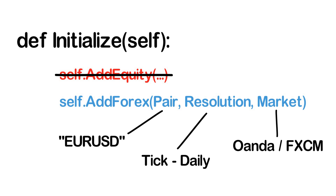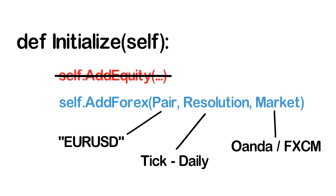The third argument is where you specify the market that you want the data for that currency to come from. Currently, QuantConnect supports two markets, namely OANDA and FXCM. OANDA supports 71 pairs and FXCM supports 39 pairs. Note that the OANDA data uses the GMT timezone, while FXCM uses Eastern Standard Time. It is also possible to set leverage as another parameter of the addForex method. By default, there is no leverage, though.